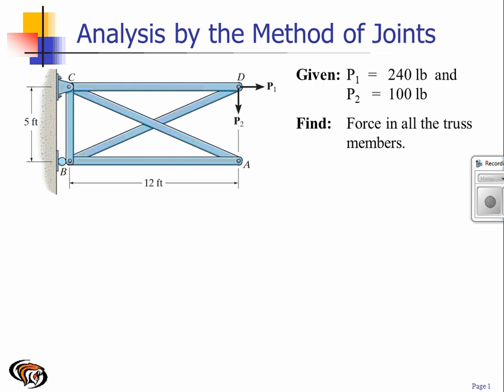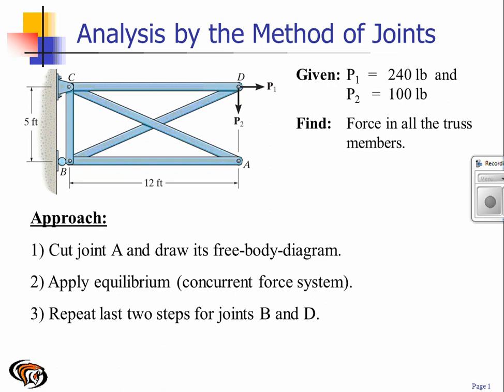So let's come up with an approach. The first thing we need to do is strategically select one of the joints where we only expose two unknowns when we cut a free body of the joint.